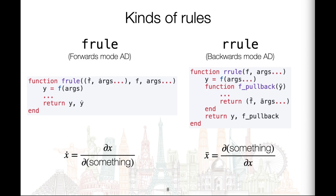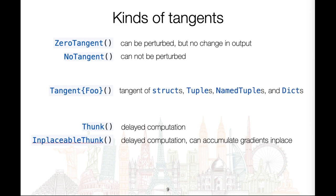As a reminder of the notation used: ẋ represents dx/d(something) and x̄ represents d(something)/dx. ChainRules also provides a number of tangent types. ZeroTangent and NoTangent both represent zero-like tangents. ZeroTangent represents the tangent for a primal that is perturbable but happens to have no effect on the primal results, while NoTangent represents that the tangent space does not exist because the primal is not perturbable — for example, an index. Tangent with a capital T is a type that represents tangents of structs, tuples, named tuples, and dicts, parameterized by the primal type. The two thunk types represent delayed computation that can potentially be avoided, and InplaceableThunk in addition can accumulate gradients in place.